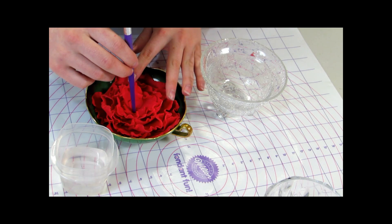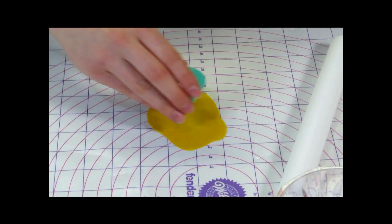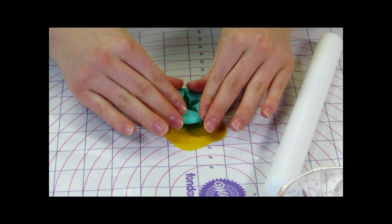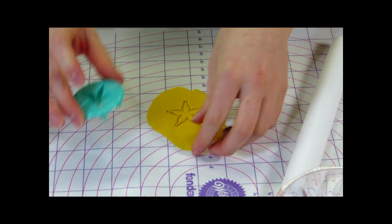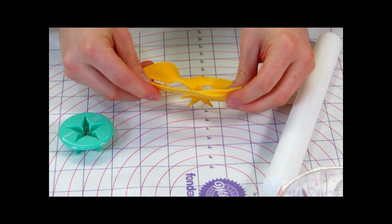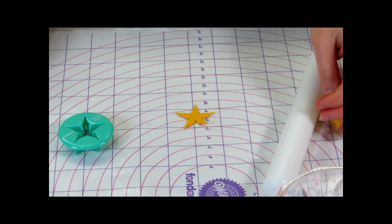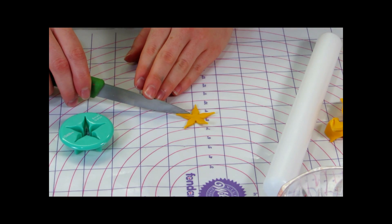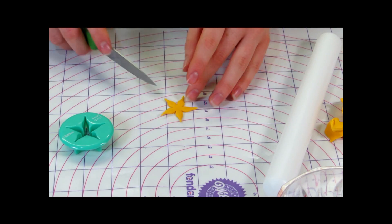Now to make the center of your flower, you're going to want to roll out some yellow fondant and then I'm using a calyx cutter. And then I'm going to cut each of the petals that are on this in half. So that's going to create little points.